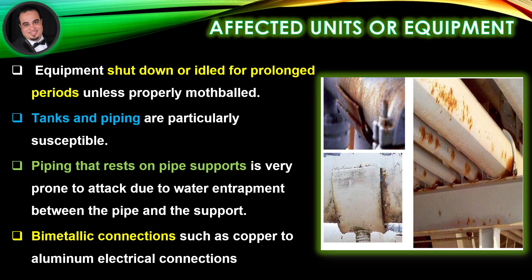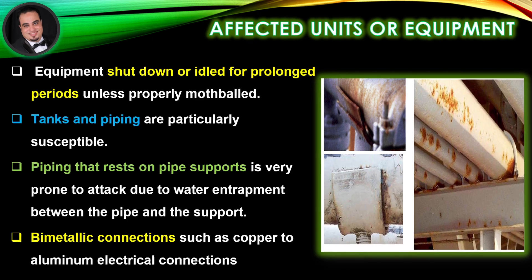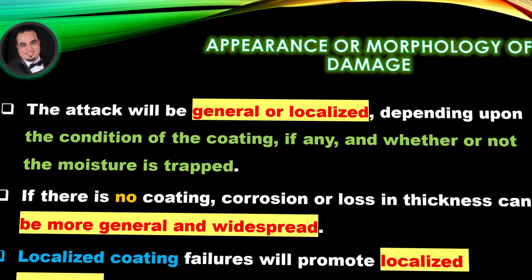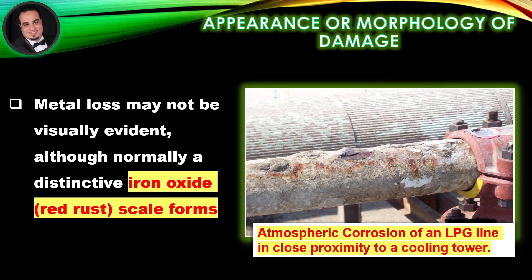Bimetallic connections, such as copper to aluminum electrical connections, are also vulnerable. Appearance or morphology of damage: the attack will be general or localized depending upon the condition of the coating, if any, and whether or not the moisture is trapped. If there is no coating, corrosion or loss in thickness can be more general and widespread; localized coating failures will promote localized corrosion. Metal lost may not be visually evident, although normally a distinctive iron oxide red rust scale forms.